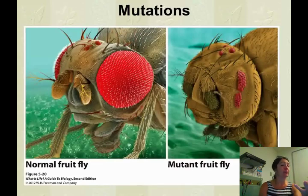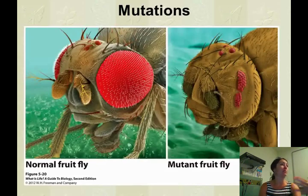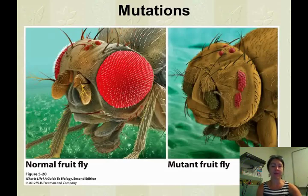If you are the mutant fruit fly, however, and you can't see where you're going and you can't tell where your food is, then that mutation would be severely harmful and you probably wouldn't make it. So that's an example of a mutation that's a bad mutation.